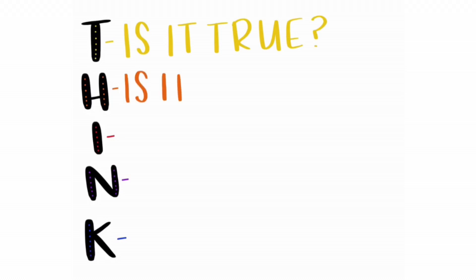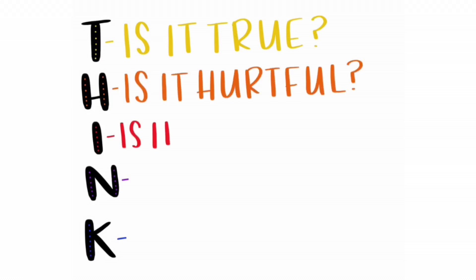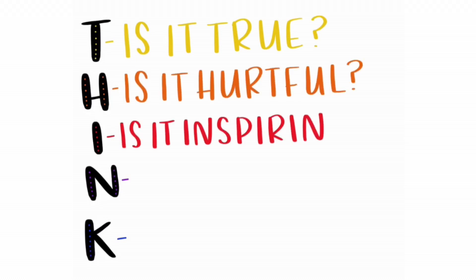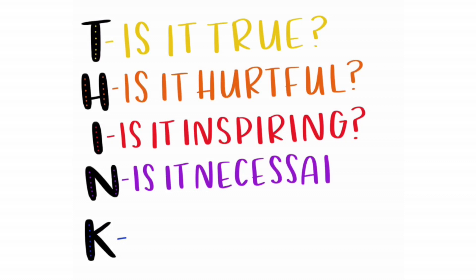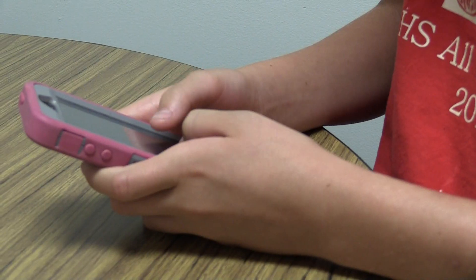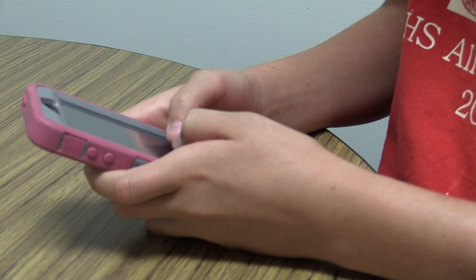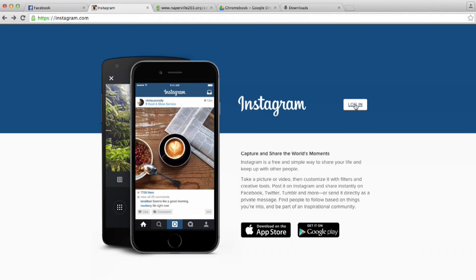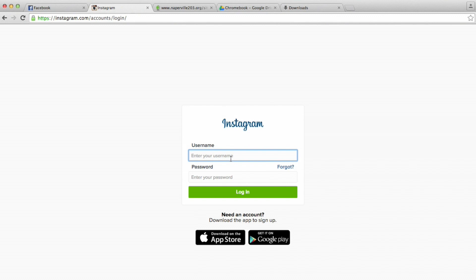That reminds me of the THINK acronym. THINK represents five questions you should ask yourself before posting something online. T — Is it true? H — Is it hurtful? I — Is it inspiring? N — Is it necessary? And K — Is it kind? It helps remind us of what we should think about before we text or post anything online or on social media. It's a good thing to consider, especially since once you post something online, it's there for life.